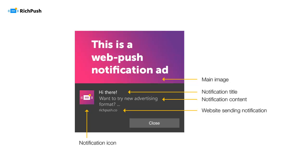Notification content is where the description of your offer appears. The number of symbols allowed is different depending on the browser. You'll see some examples soon.